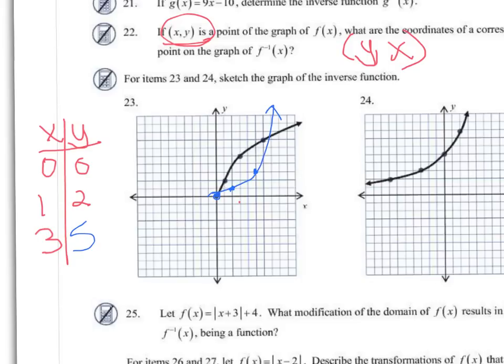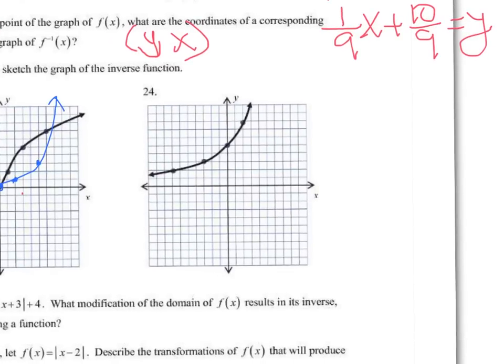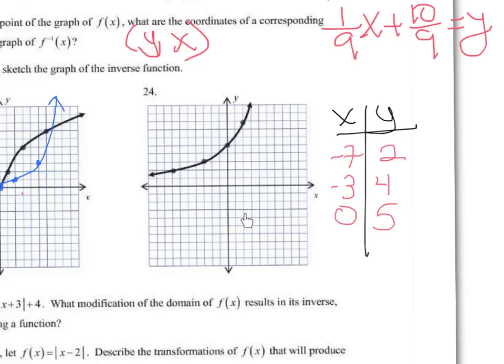So now for 24. Let's see. This point is at 1, 2, 3, 4, 5, 6, 7. So that's negative 7, 2. Then we've got 1, 2, negative 3, 4, 0. 1, 2, 3, 4, 5. So let's see. If I switch those, I'm going to get the 0.2, negative 7. 1, 2, 3, 4, 5, 6, 7.